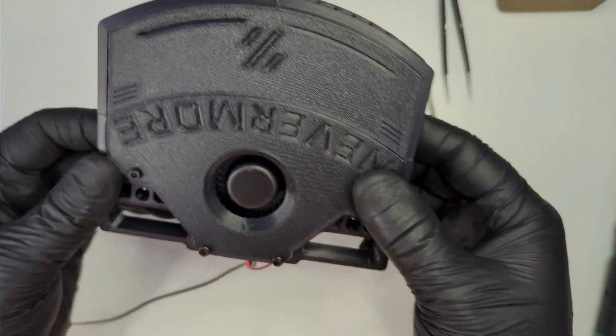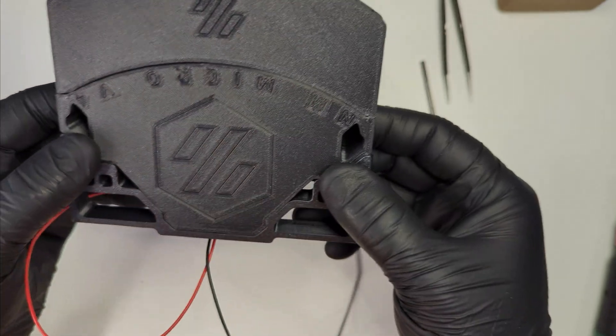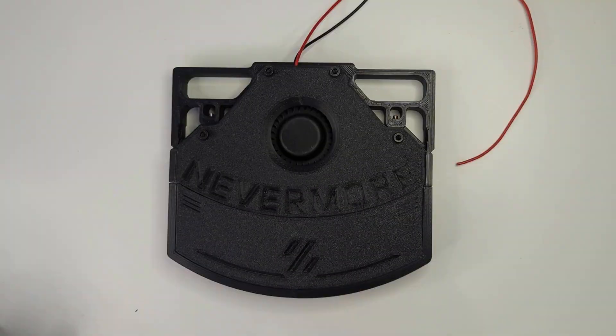It is done now. All you have left to do is to crimp both wires at the required length, fit them in the JST connector, plug it to your mainboard and configure it in Klipper. Enjoy!